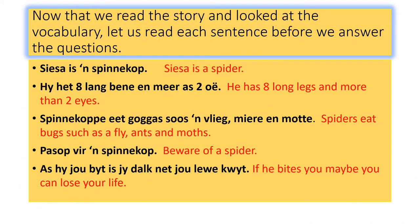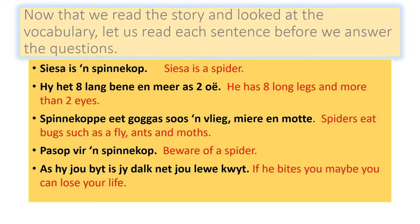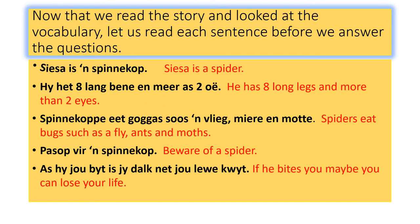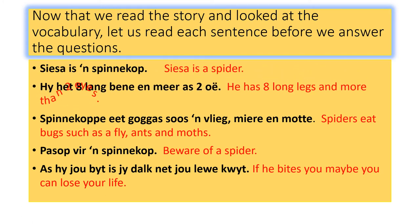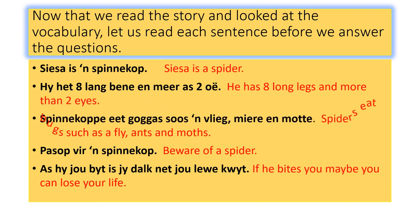Now that we have read the story and looked at the vocabulary, let us read each sentence before we answer the questions. Sisa is a spinnekop — Sisa is a spider. Hy het agt lang pootjies en meer as twee oë — He has eight long legs and more than two eyes. Spinnekoppa eet goggas soos 'n vlieg, miere en motte — Spiders eat bugs such as a fly, ants and moths.